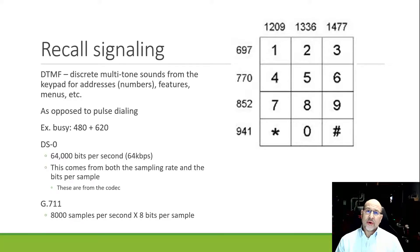Remember also that when we were talking about a DS0, we talked about that it was 64,000 bits per second or 64k. And that comes from two things.